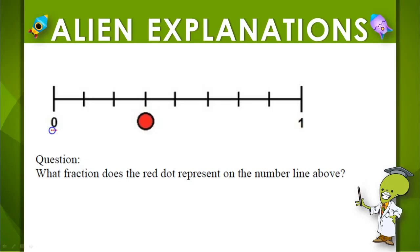Our number line starts at 0 and ends at 1, and we're trying to find what fraction the red dot represents. First, let's find out how many equal parts our number line is separated into.